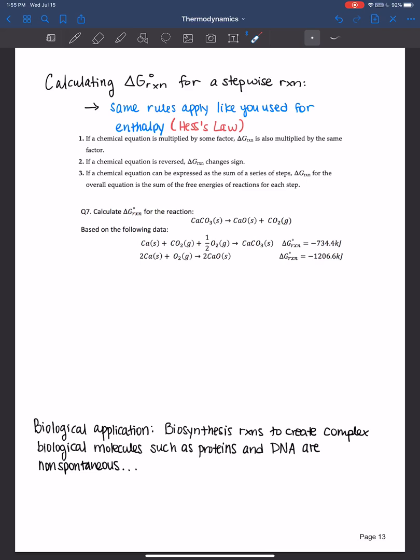Let's do an example together. Calculate the Gibbs free energy for the reaction below: the decomposition of calcium carbonate into calcium oxide and carbon dioxide. We have two reactions here with their individual Gibbs free energies. What I like to do is find the common chemical or compound.